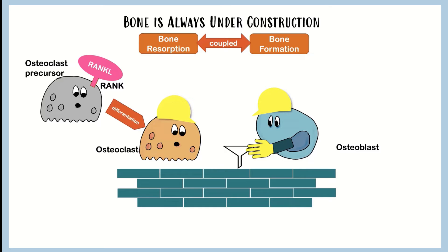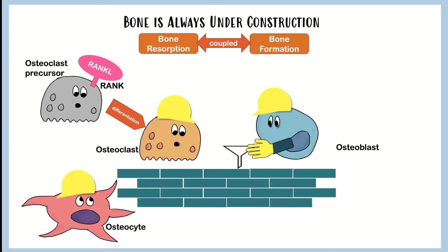So osteoblasts have osteoclasts on demand - they can literally make more of these little guys, which is handy. Now, one other cell that hangs out in bone that I haven't mentioned yet is the osteocyte. The osteocyte has the best job on the building site; they're really overseeing everything and their job is really easy.